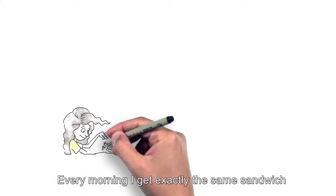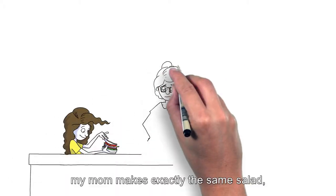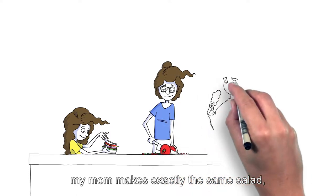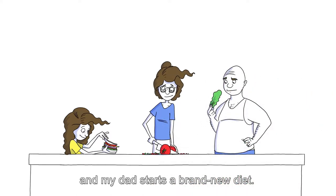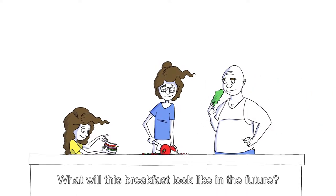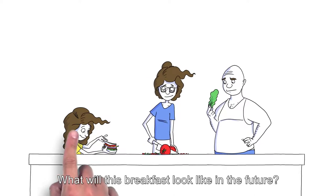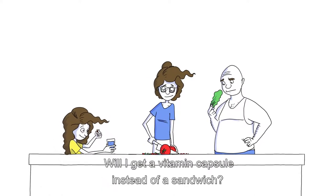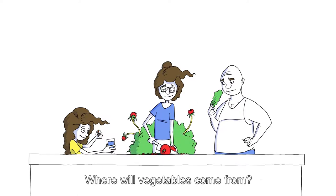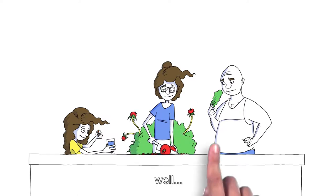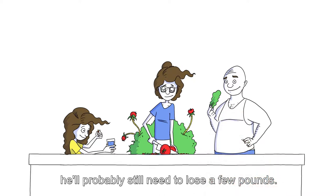Every morning I get exactly the same sandwich, my mom makes exactly the same salad, and my dad starts a brand new diet. What will this breakfast look like in the future? Will I get a vitamin capsule instead of a sandwich? Where will vegetables come from? And my dad? Well, he'll probably still need to lose a few pounds.